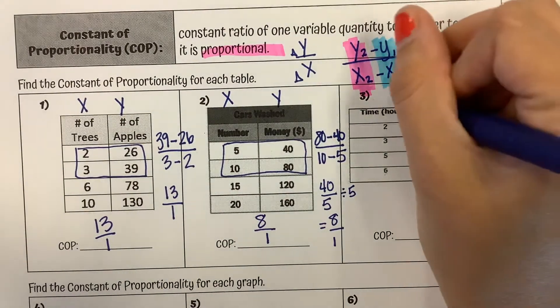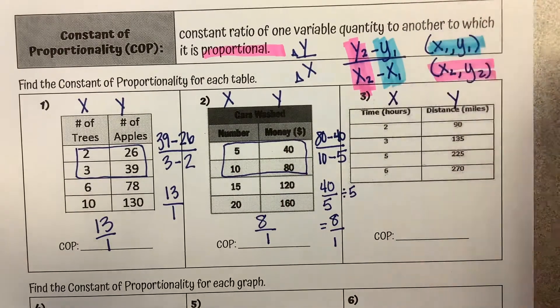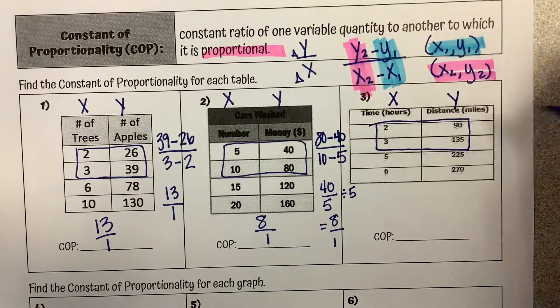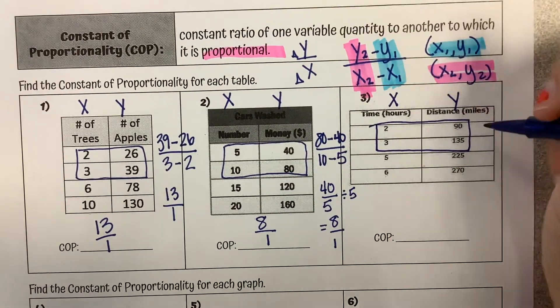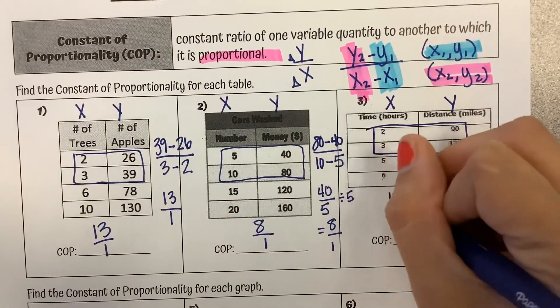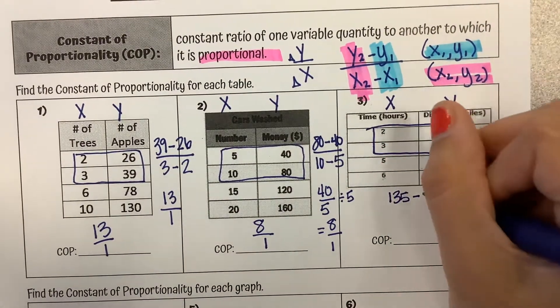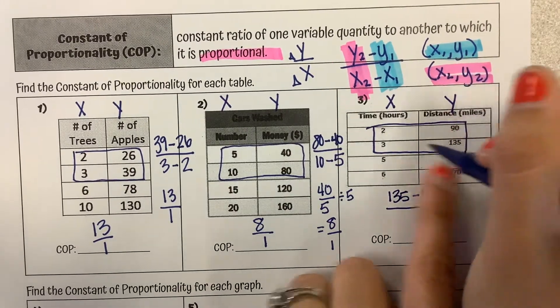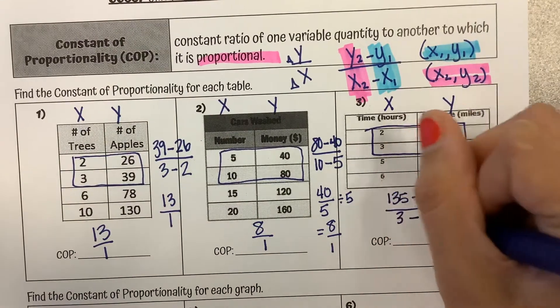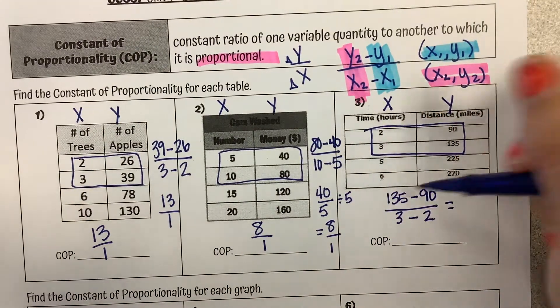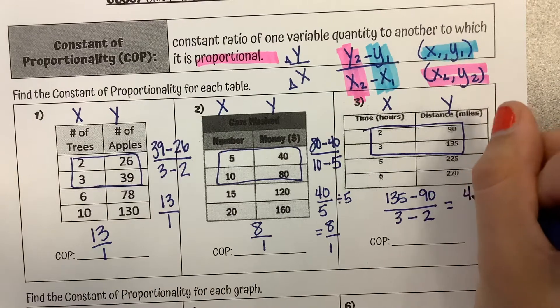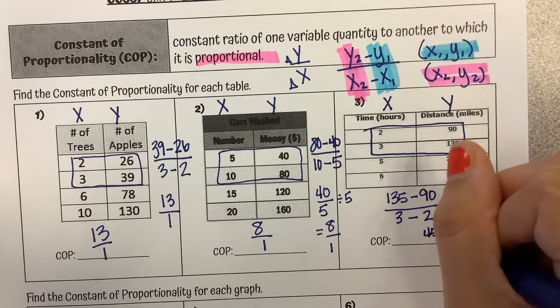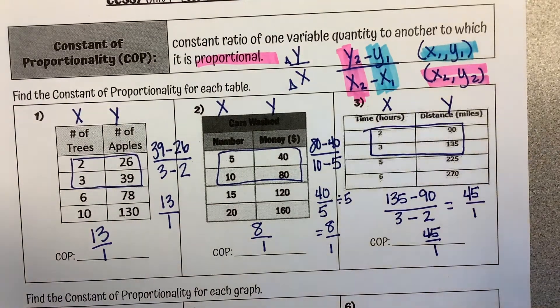And then another table here, we've got x on the left, y on the right. I'm going to start with my two lowest values, and I'm going to do my y's first. I'm going to start with the bigger y. 135 minus 90, over, since I started with 135 for y, we're going to start with 3 for x, minus 2. 135 minus 90 is 45, over, 3 minus 2 is 1. So our constant of proportionality is 45 over 1.